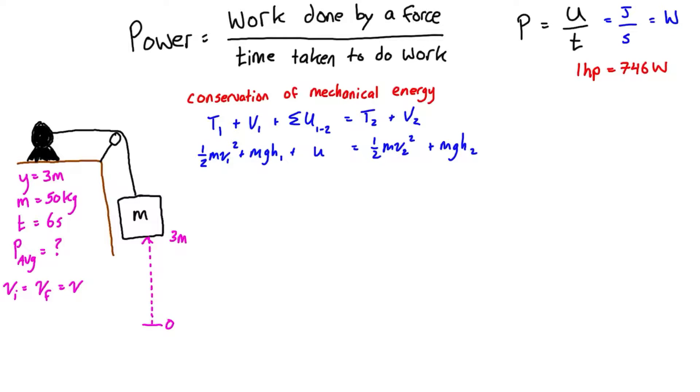Right away we can cancel out the term for potential energy one because h1 is equal to zero. This is h1 whereas this is h2, so h1 being zero makes that whole term go to zero. And because velocity one is equal to velocity two, which is equal to some generic constant velocity, we can simplify further.